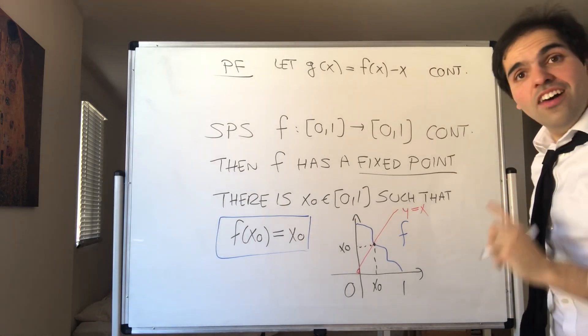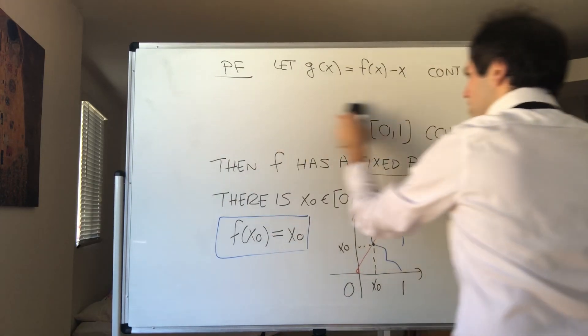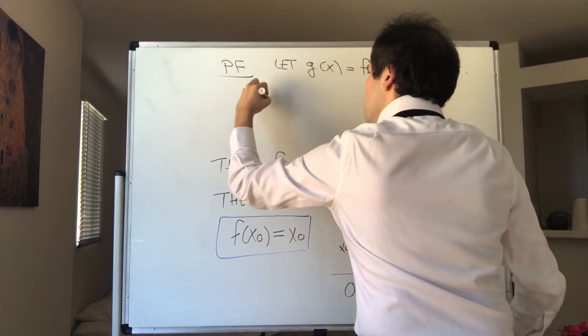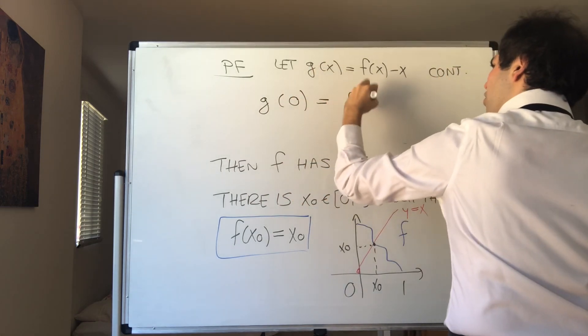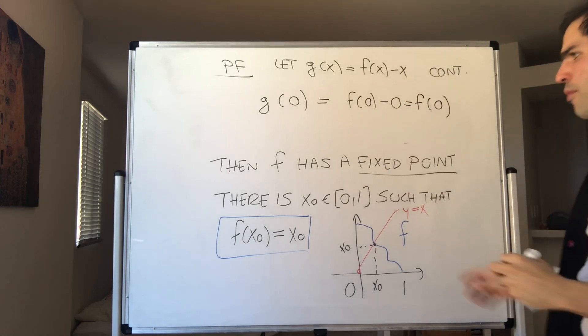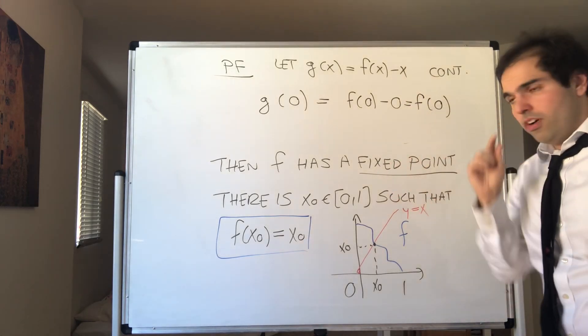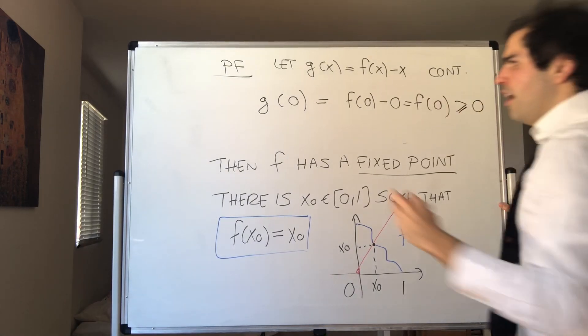And moreover, let's calculate g(0) and g(1). Then g(0) is f(0) minus 0, and that's f(0). But remember, f is between 0 and 1, so definitely this is greater than or equal to 0.